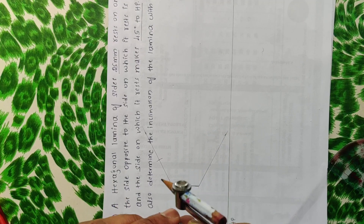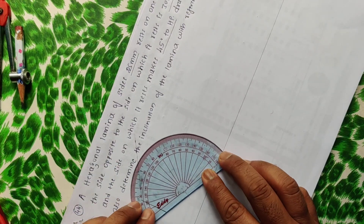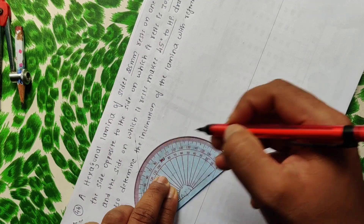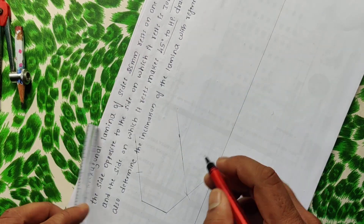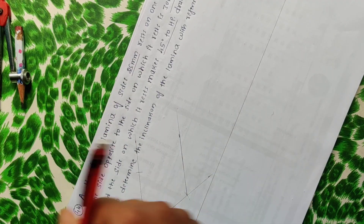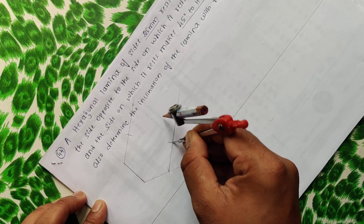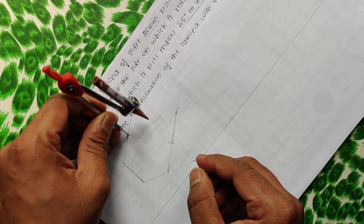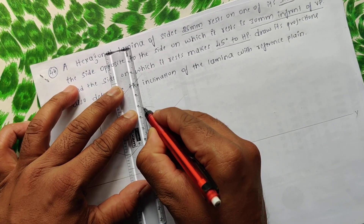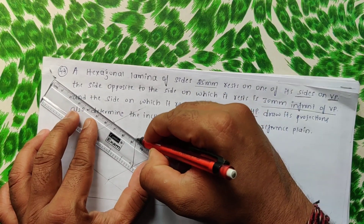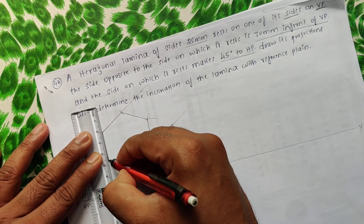Now measure one more angle — keeping the protractor here at 60 degrees, draw one thin infinite line at this position. Cut it for 25mm. Then from this position cut a 25mm arc and from the next position one more 25mm arc to get the final corner. Join all the corners and increase the thickness — all hexagonal sides should be thick and all projection and construction lines should be thin.